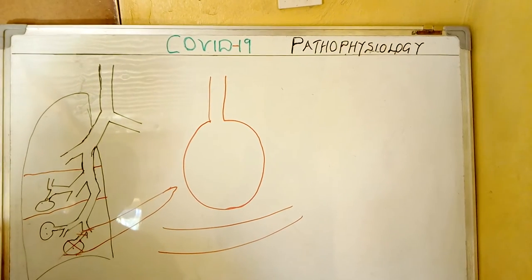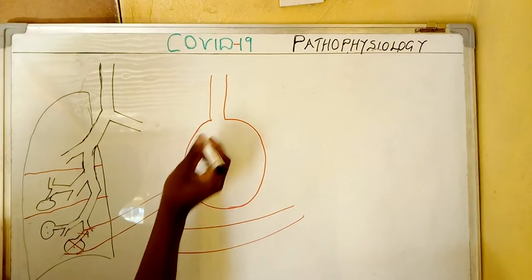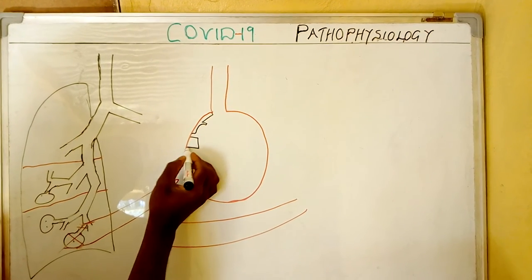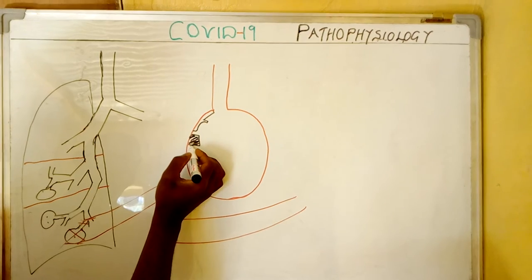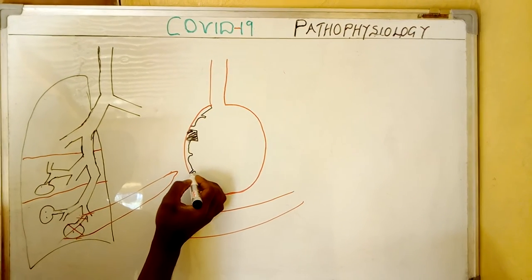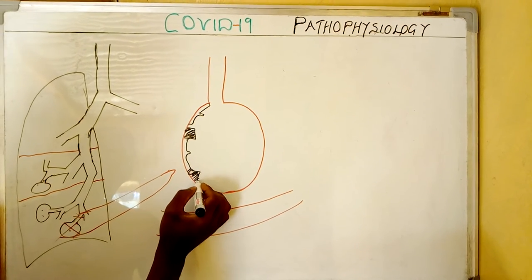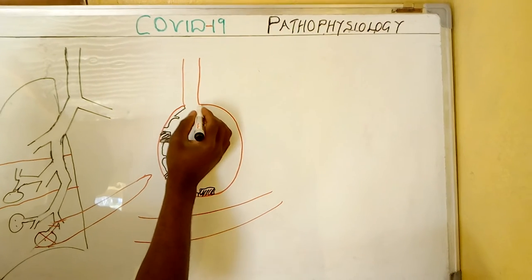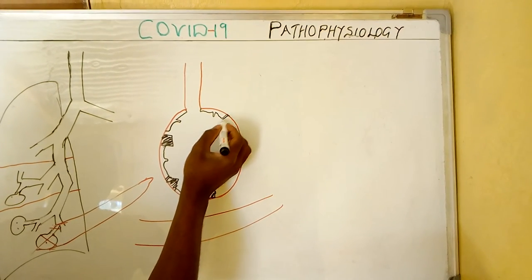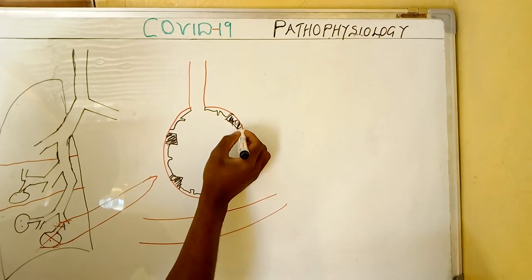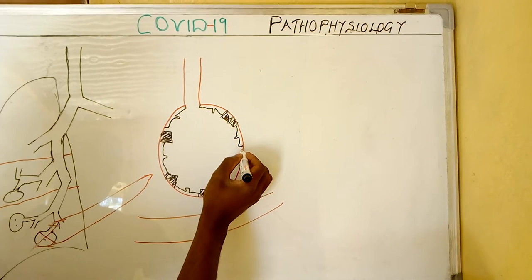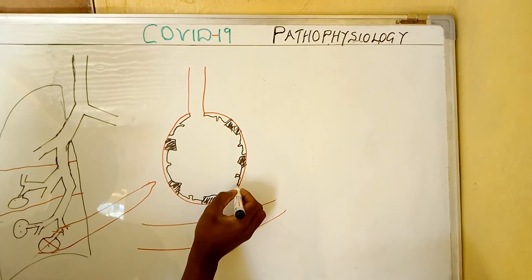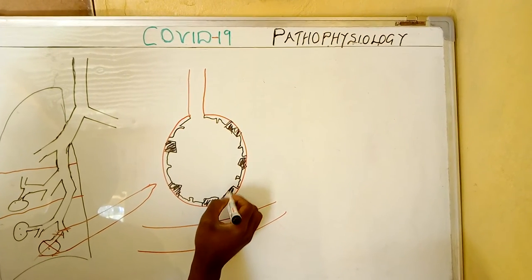Inside the alveoli, we have got different types of cells. And what is the name of these cells? These are pneumocyte cells. As you can see, the way I've drawn these cells is that they are different — you have cells that are not shaded and cells that are shaded.